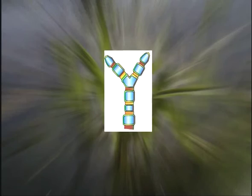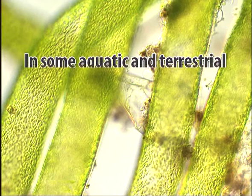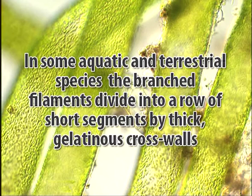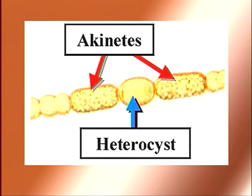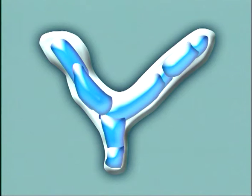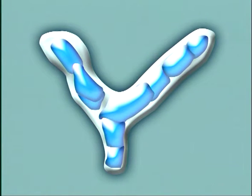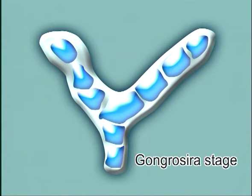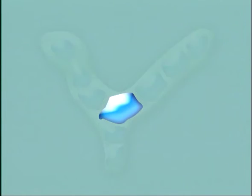Another method of asexual reproduction is formation of akinetes. In some aquatic and terrestrial species, when exposed to greater desiccation or low temperature, the branched filaments divide into a row of short segments by thick gelatinous cross walls. These resting multinucleate thick-walled segments are known as cysts, hypnospores, or akinetes. The cysts in a chain may remain connected by the parent membrane, appearing like another alga, Gongrosira — thus this stage of Vaucheria is also called the Gongrosira stage. On onset of favorable conditions, the akinetes directly grow into a new individual.